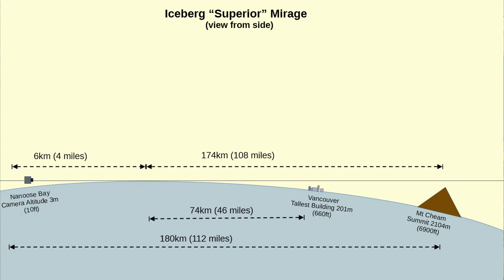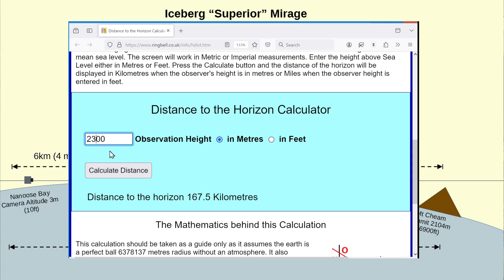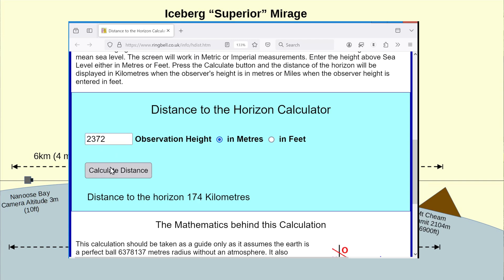It turns out that the horizon is about six kilometers away from a camera that's three meters above sea level. Since we know how far the horizon is from the camera, we can also figure out how far that point is from Mount Sheem and from Vancouver. With that, we can use our horizon calculator in reverse to figure out how high Mount Sheem would have to be if its peak was just touching the horizon. It turns out it would have needed to have been 2,372 meters high if its peak was just barely visible to the camera.